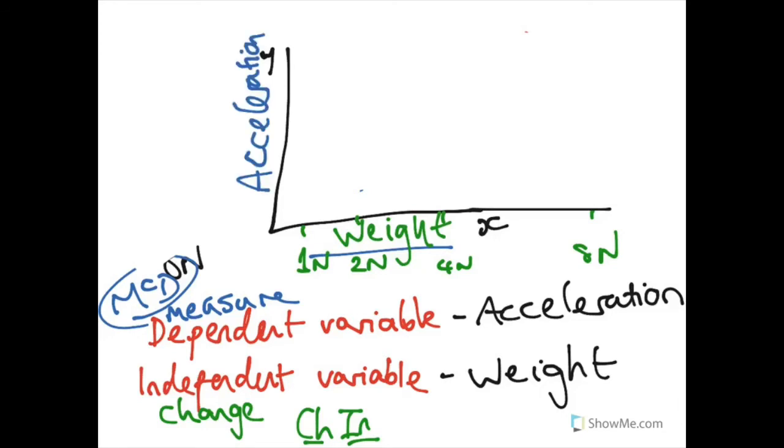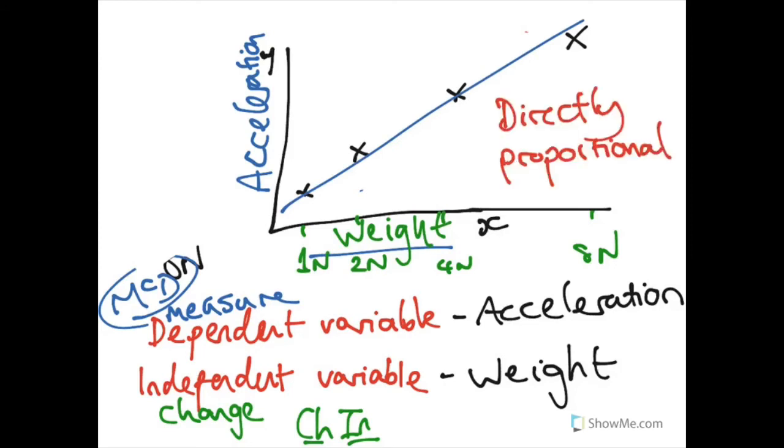You're going to do a scatter plot with weight on the bottom and acceleration on the y-axis. What you should find is if you plot your results, you should get a nice straight line. The reason why is because these things are directly proportional. If you double the force on the trolley, the acceleration should also double. If you times the weight on the trolley by eight times, the acceleration should also go up by eight times.